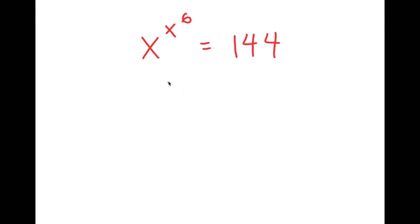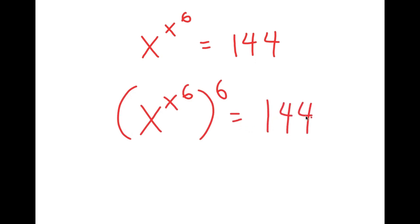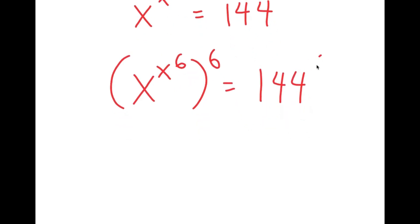To solve this, I'm going to first start by taking the power of 6 on both sides. So I get x to the power of x to the power of 6, to the power of 6, is equal to 144 to the power of 6.